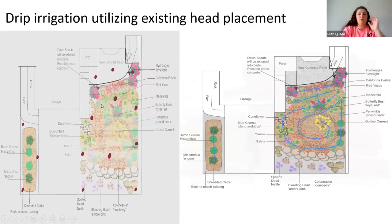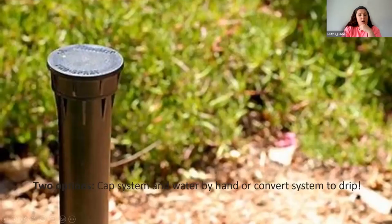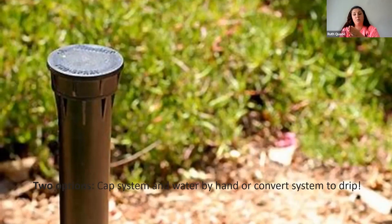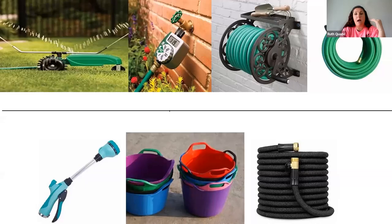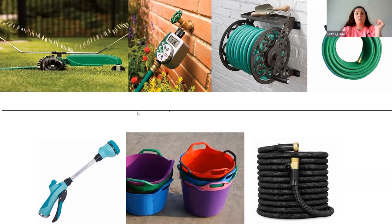Drip irrigation — utilizing existing head placement. We used one of these heads, tapped into it, and ran our drip system from that. Two options when you're first thinking about this: either you can cap your system as we did in that first design, or you can just water by hand. If it's small enough and something you enjoy, by all means, don't feel like you have to switch to landscape irrigation if you don't need to.